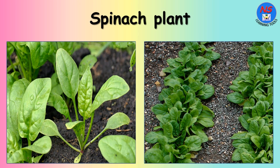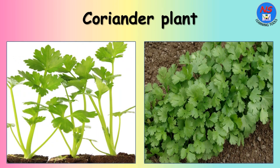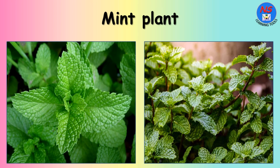Spinach plants are short-sized plants without woody tissues. Coriander plants have soft green delicate stems. Mint plants have few branches and can be easily uprooted.